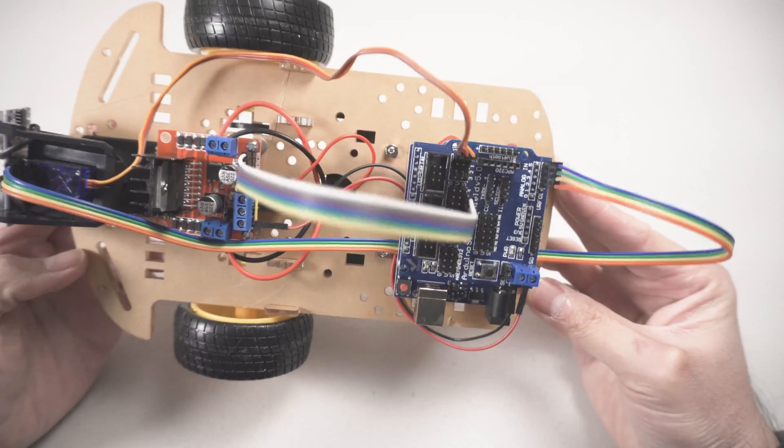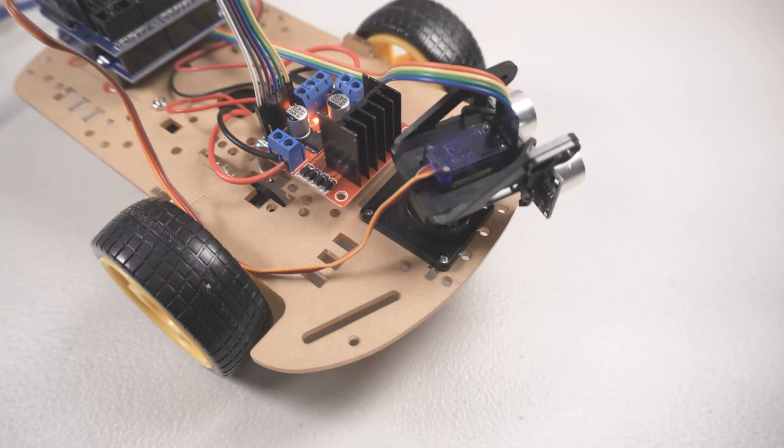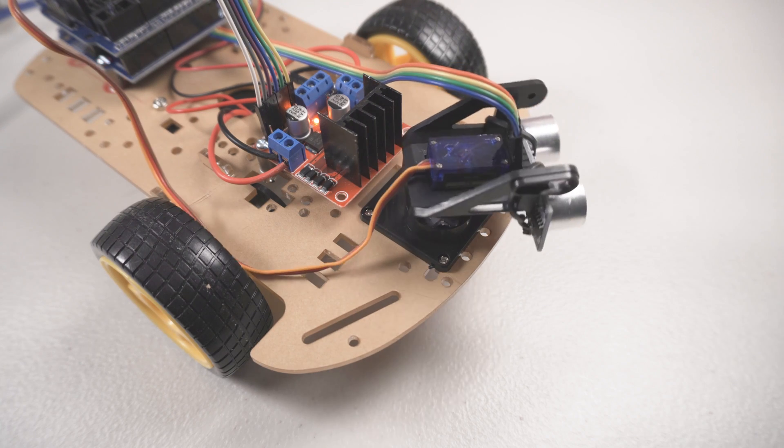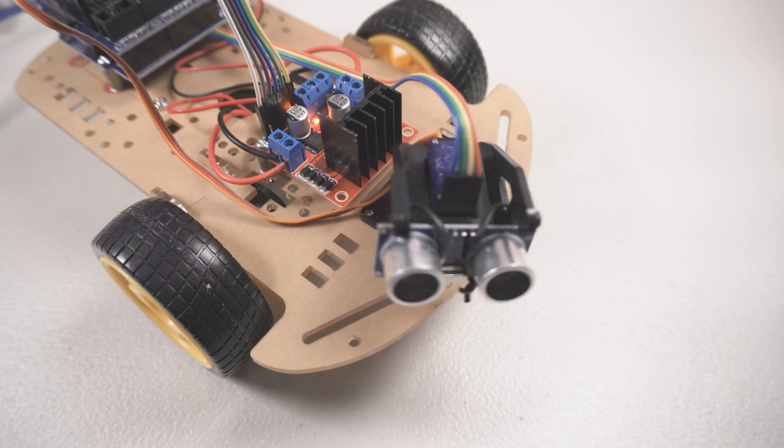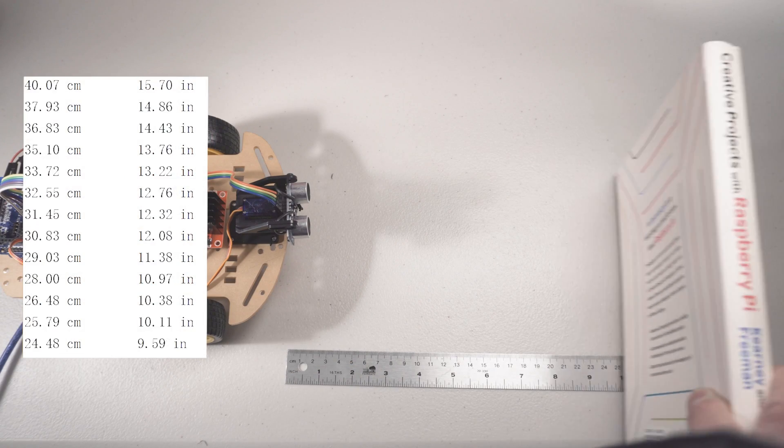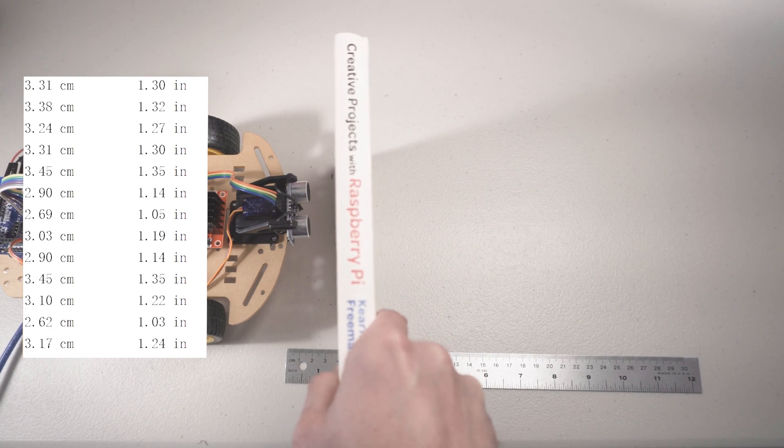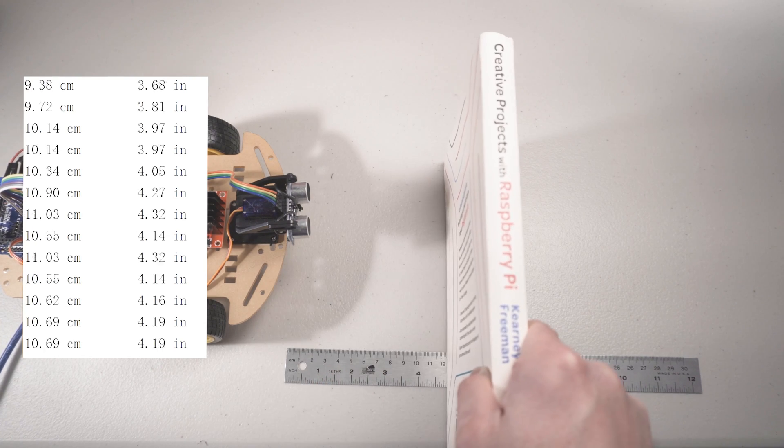Before wrapping up, let's do more tests to make sure everything is properly connected. Upload the smart car servo test to your Arduino, and it will start doing a simple sweep. Upload the smart car ultrasonic sensor test and open serial monitor. You can see the sensor is working properly. Again, the codes are in the description.